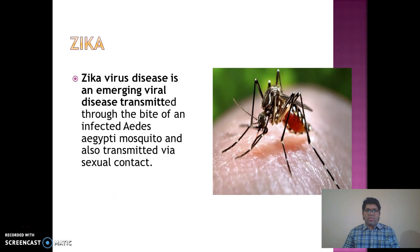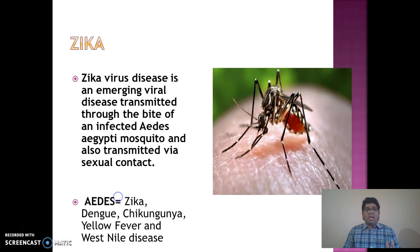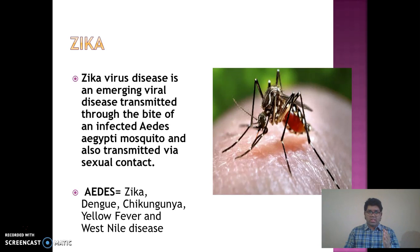Zika is an emerging viral disease transmitted through the bite of an infected Aedes aegypti mosquito, and is also transmitted through sexual contact. This particular mosquito is also responsible for causing dengue, chikungunya, yellow fever, and West Nile disease. So it is important to note these diseases caused by this type of mosquito.